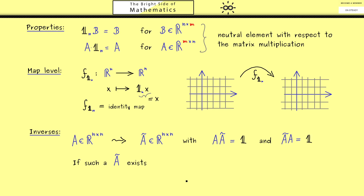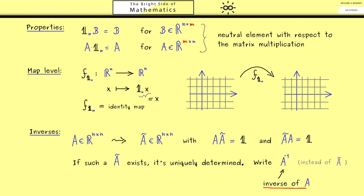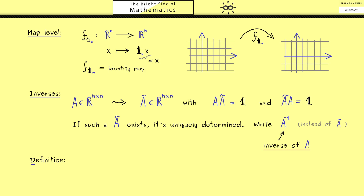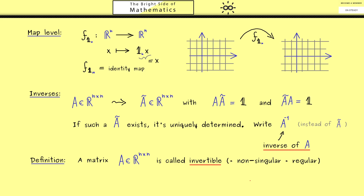We can immediately say that if such an A-tilde exists, it is uniquely determined — there is only one such matrix that can fulfill both equations. For this reason we write A inverse instead of A-tilde, and this is what we call the inverse matrix of A. So there is at most only one such inverse matrix. We call a square matrix A an invertible matrix if such an inverse matrix exists. There are also other equivalent names: one says the matrix is non-singular, or one says the matrix is regular. In the end all these terms mean the same thing — that the matrix has an inverse.